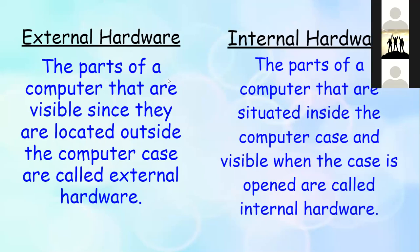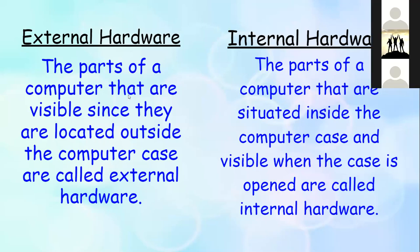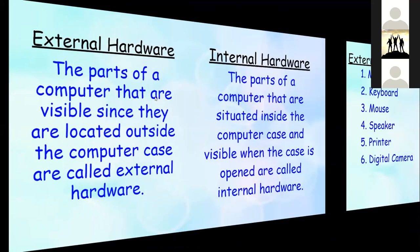The parts of a computer that are visible since they are located outside the computer case are called external hardware. The parts situated inside the computer case, visible when the case is opened, are called internal hardware. Some examples of external hardware components are monitor, keyboard, mouse, printer, speaker, and digital camera.